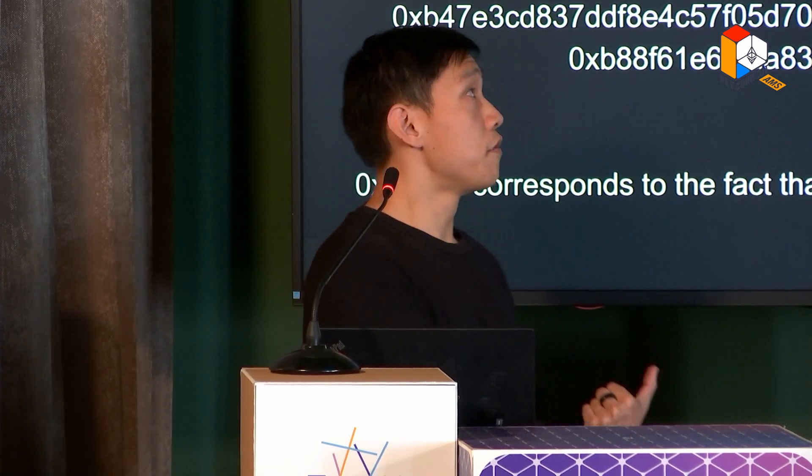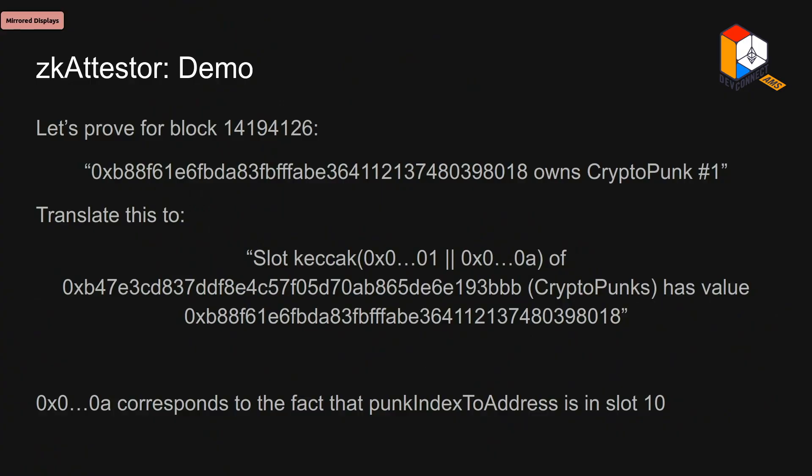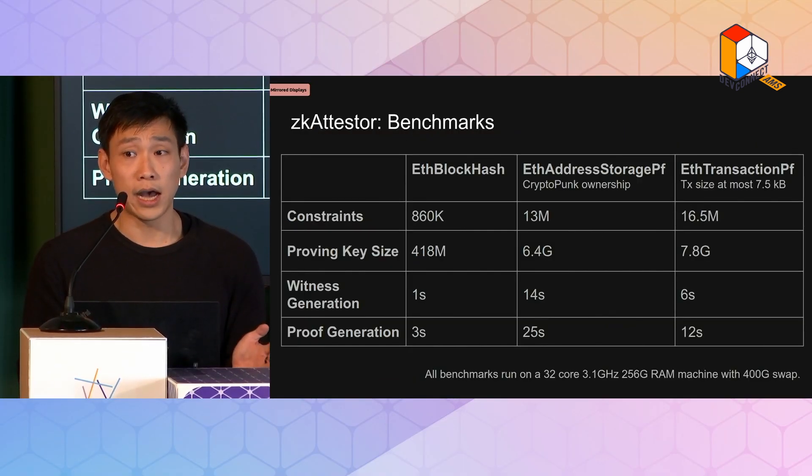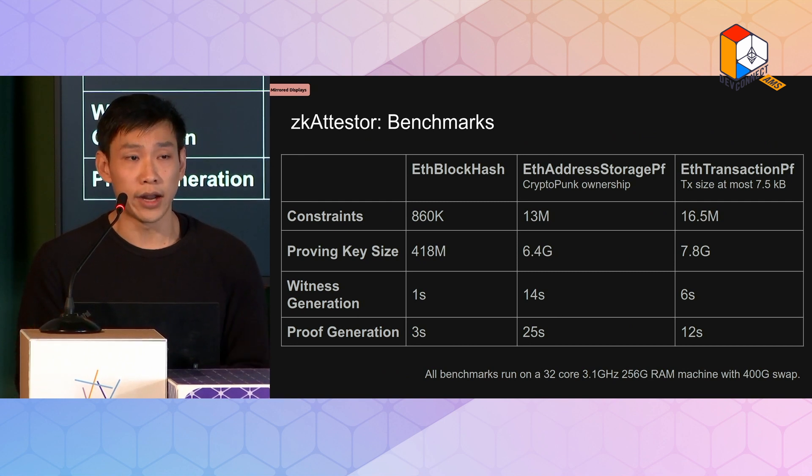This proved that for this specific block number, this address — which is not my address — owns CryptoPunk number one. To wrap up: ZK Attester right now can do address and storage proofs, as well as transaction proofs and the hash of the block header proof. As you can see, they're both around 13 to 16 million constraints in R1CS. The proving keys are pretty big, but as you just saw live, the witness generation and proof times are not so bad. There are some technical limitations — I can only prove transaction sizes up to 7.5 kilobytes out of a maximum possible of 30 kilobytes — but I hope to remove those soon.